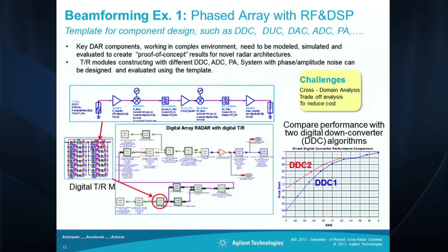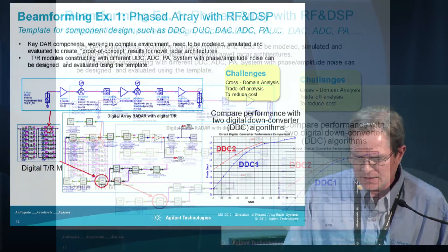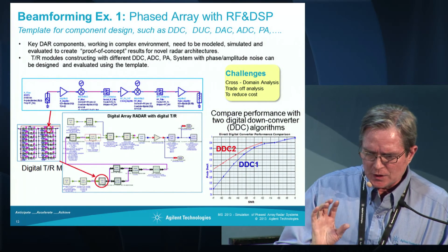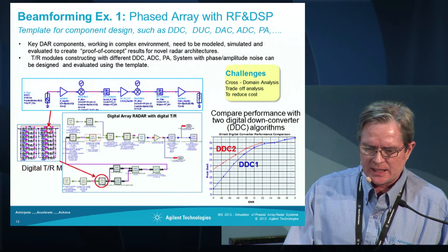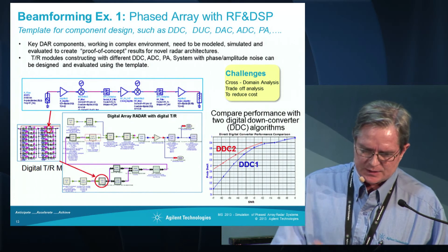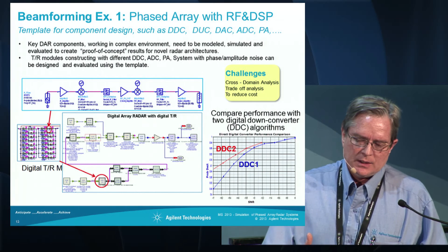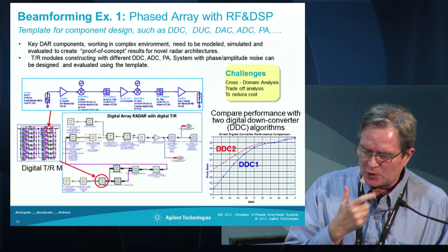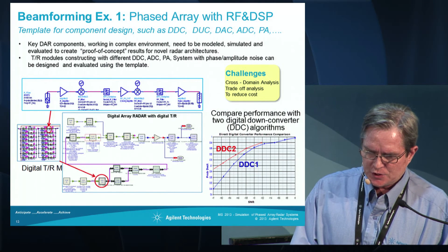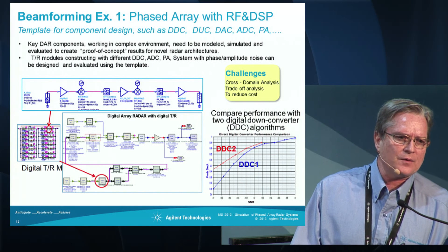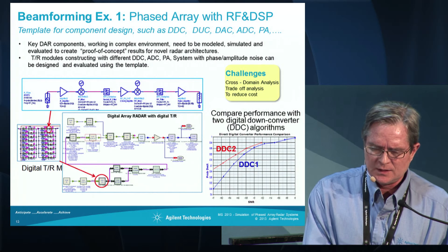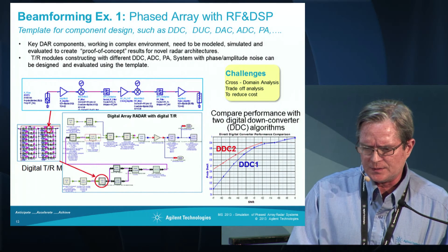Here's a simple example where we're comparing algorithms for two digital down converters. At the top you see the co-simulation with ADS. On the far left there's a picture of multiple transceiver modules. The graph at the bottom right shows the difference in error rate comparing the two different digital down converter algorithms. This will help you make a better choice before you actually get to hardware.